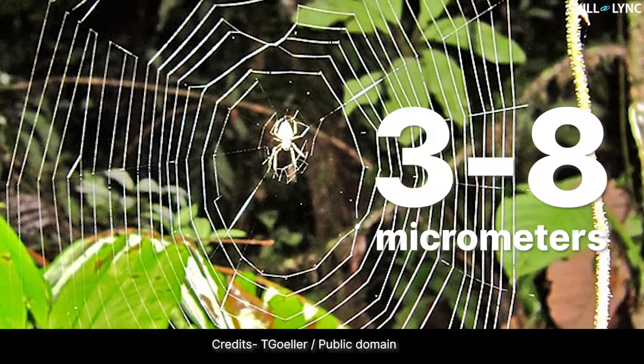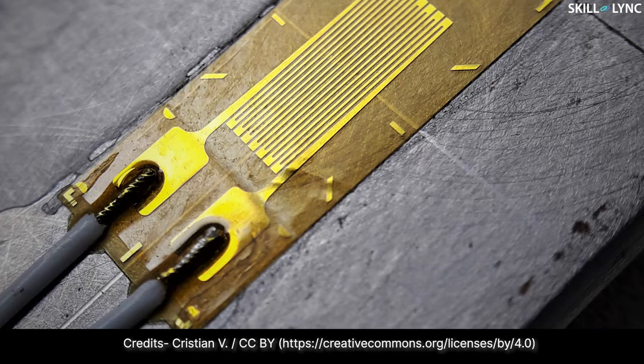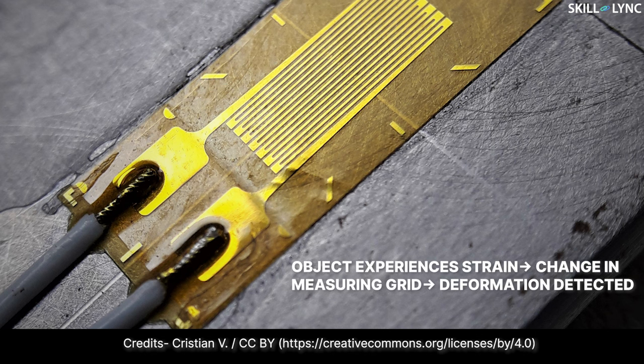For comparison, the width of one strand of spider web is about 3 to 8 micrometers - yes, that thin. Strain gauges are pasted onto objects with an adhesive, and because of this, when the object experiences even the slightest strain, it leads to a corresponding change in the measuring grid, and thus the deformation can be detected.